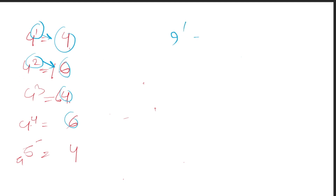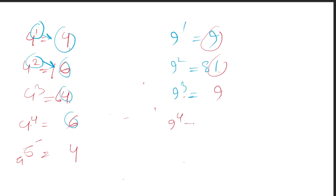9 to the power 1 is 9. 9 to the power 2 ends in 1. 9 to the power 4 ends in 1. 9 to the power 5 ends in 9. So the pattern for 9 is: 9, 1, 9, 1 — it alternates in a cycle of 2.